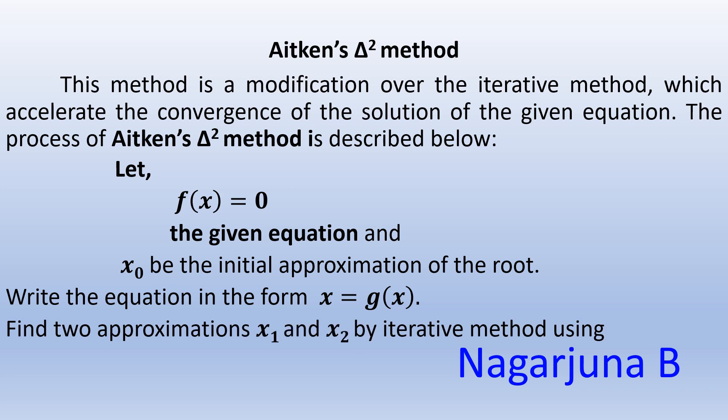Find two approximations x₁ and x₂ by the iterative method. x₀ is the initial approximation obtained from f(x). We use the iterative formula xₙ₊₁ = g(xₙ) to find x₁ and x₂. That means x₁ = g(x₀) and x₂ = g(x₁).